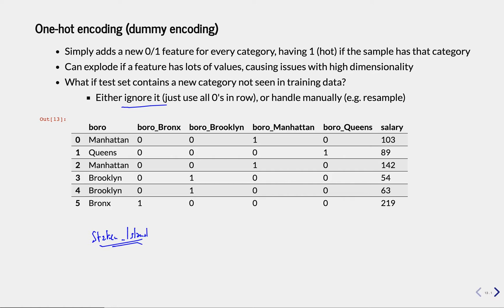Another common thing to do is to just ignore it. So whenever you have a value, whenever you encounter a new value like this, you would just represent it by all zeros in your test set, that's also possible.